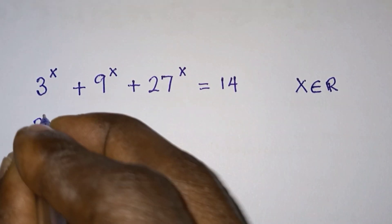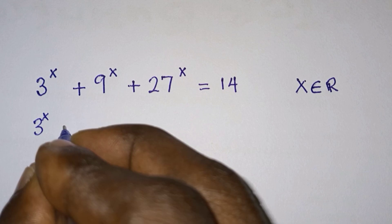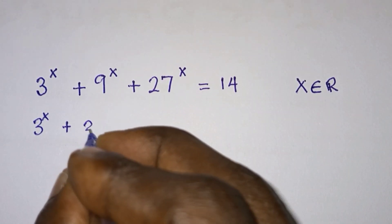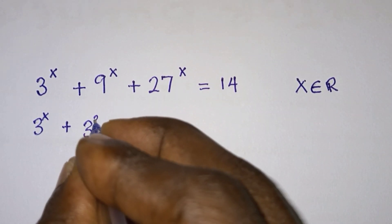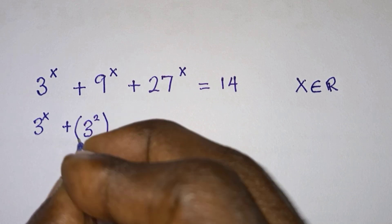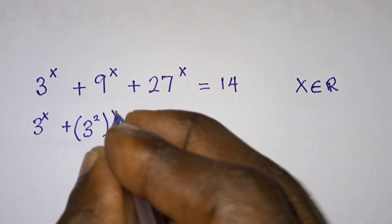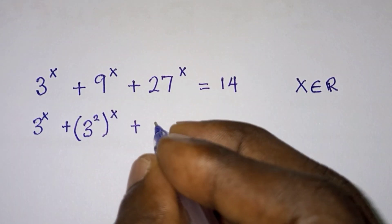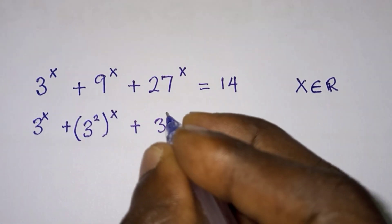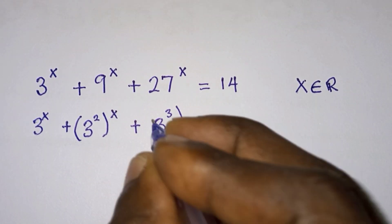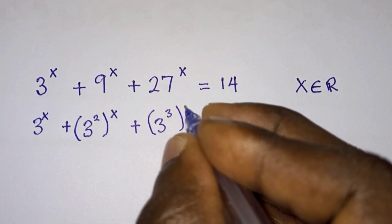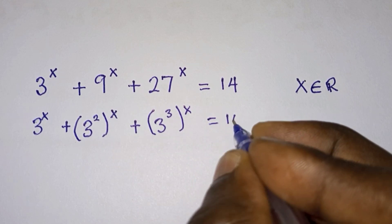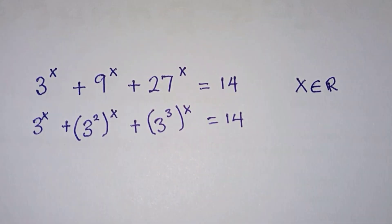We have 3 to the power x, plus 9 — which is the same as 3 to the second power — all to the power x, plus 27 — which is the same as 3 to the third power — all to the power x, and this is equal to 14.